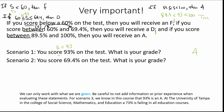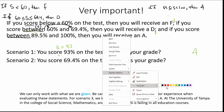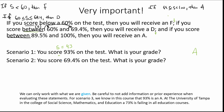Scenario two: you score 69.4% on the test. What is your grade? Now S equals 69.4. Plugging into the F conditional: 60 is definitely not greater than 69.4, so I know I don't have an F. Now plugging in 69.4 for the D conditional: 69.4 is greater than or equal to 60 — definitely true — and 69.4 is less than or equal to 69.4, which is also true. So here we can say that we've earned a D.